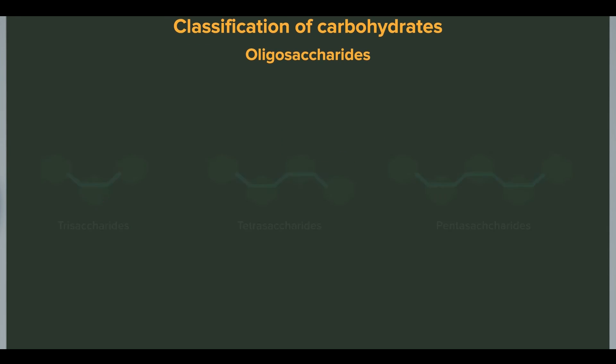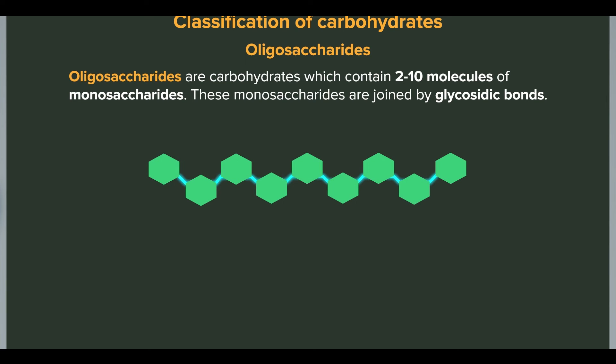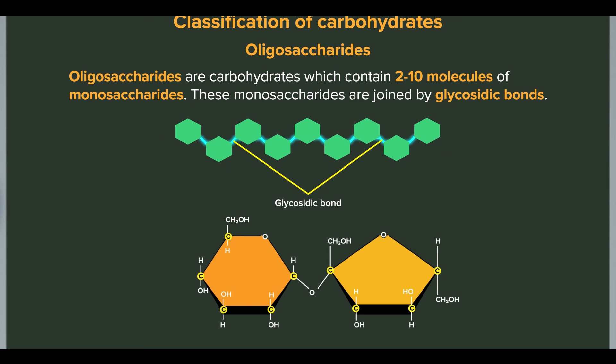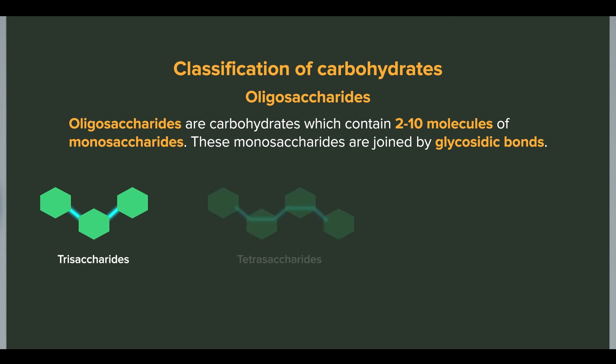In other words, oligosaccharides are carbohydrates which contain 2 to 10 molecules of monosaccharides. These monosaccharides are joined together by glycosidic bonds. Oligosaccharides are further classified on the basis of monosaccharide units in them. For example, oligosaccharides which are made up of two monosaccharide units are known as disaccharides. Similarly, other oligosaccharides are trisaccharides, tetrasaccharides, and pentasaccharides.